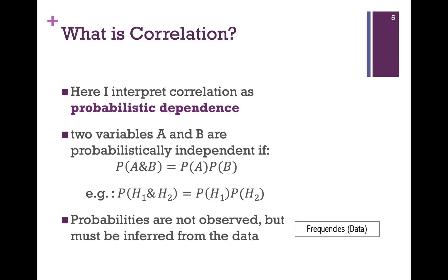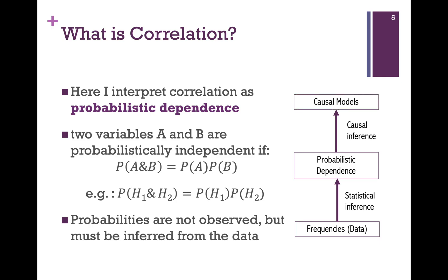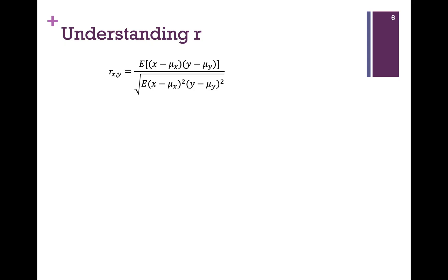When doing causal inference from data, there are in fact two steps. First, we need to infer probabilities from the data — that's standard statistical inference — and then we need to infer the causal models from facts about probabilistic dependence, and that's causal inference. The most common measure of correlation is the Pearson correlation coefficient, denoted by R. A correlation between x and y is given by the following expression, where E refers to the expectation operator, which takes the average. Mu x and mu y are the mean values of x and y, and the terms in parentheses are all deviations of observed values of these variables from their means.